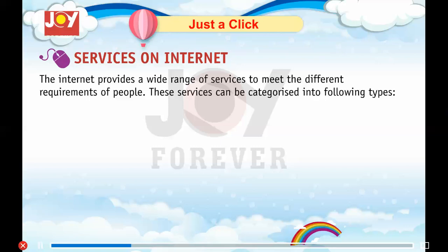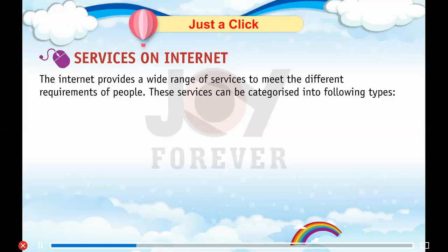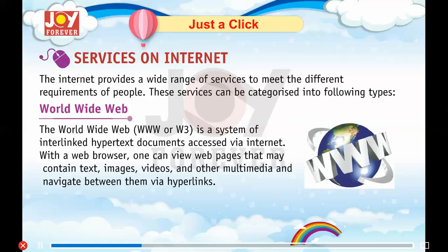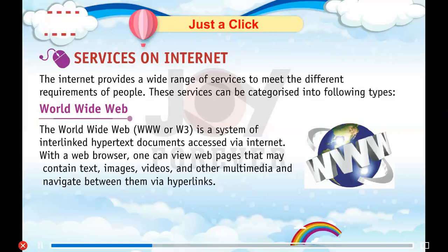Services on the Internet: The internet provides a wide range of services to meet different requirements of people. These services can be categorized into the following types. World Wide Web: The World Wide Web, or WWW or W3, is a system of interlinked hypertext documents accessed via the internet. With a web browser, one can view web pages that may contain text, images, videos, and other multimedia.